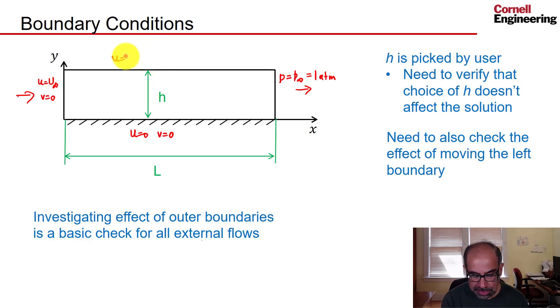And at this boundary I'll assume that we are far enough away from the plate that I can just set it to free stream. You can use other types of boundary conditions here, but we have checked that that doesn't change the solution. So we either have boundary conditions on the velocity or the pressure.